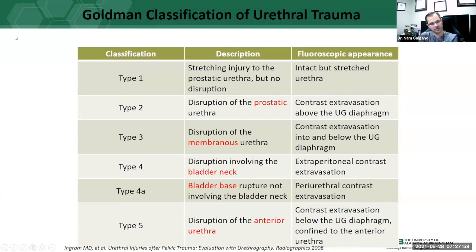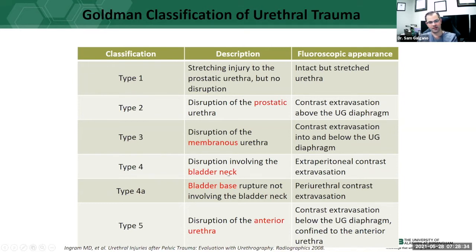The Goldman classification has five types. Type one is a stretching injury, which can be challenging to diagnose depending on patient positioning. Type two is an injury of the prostatic urethra with contrast extravasating above the urogenital diaphragm. Type three is disruption of the membranous urethra where contrast extravasates into and below the urogenital diaphragm. Type four is disruption involving the bladder neck with extraperitoneal contrast extravasation; type four-A is a bladder base rupture not involving the bladder neck. Type five is disruption of the anterior urethra, most common with penetrating trauma, with contrast extravasation below the urogenital diaphragm.